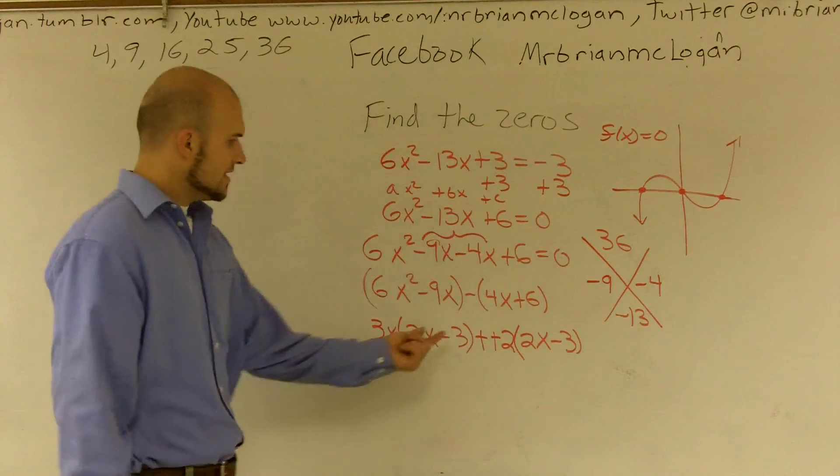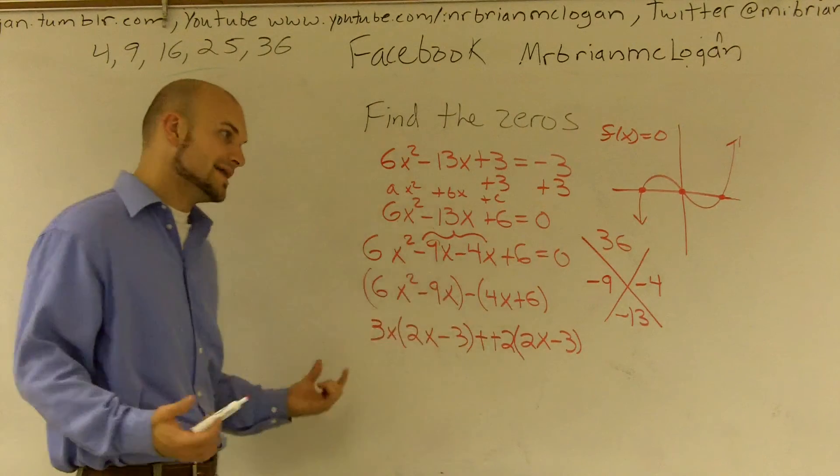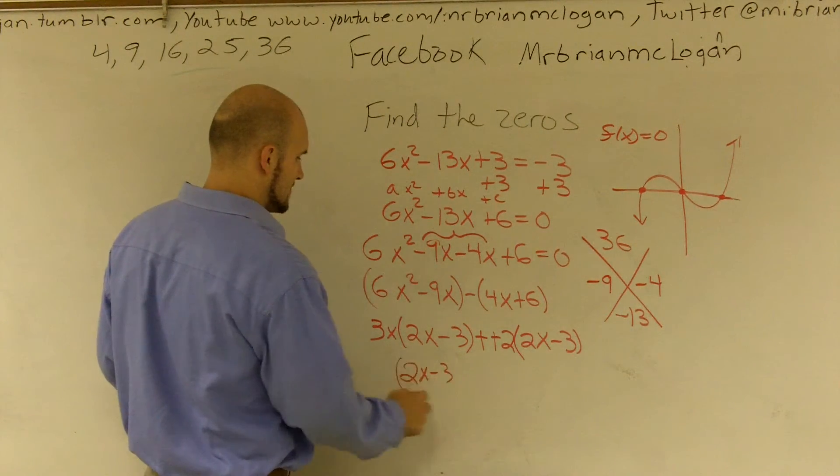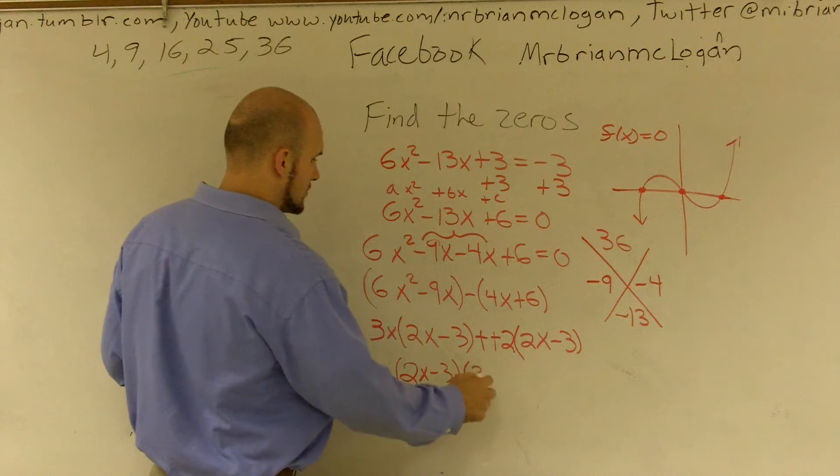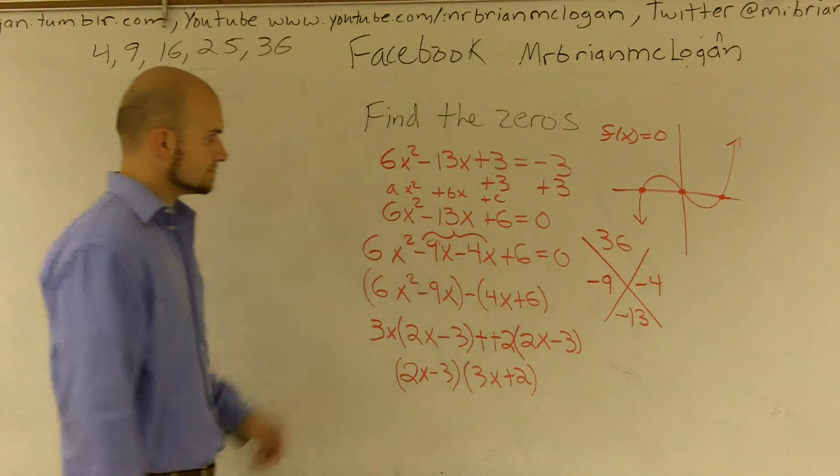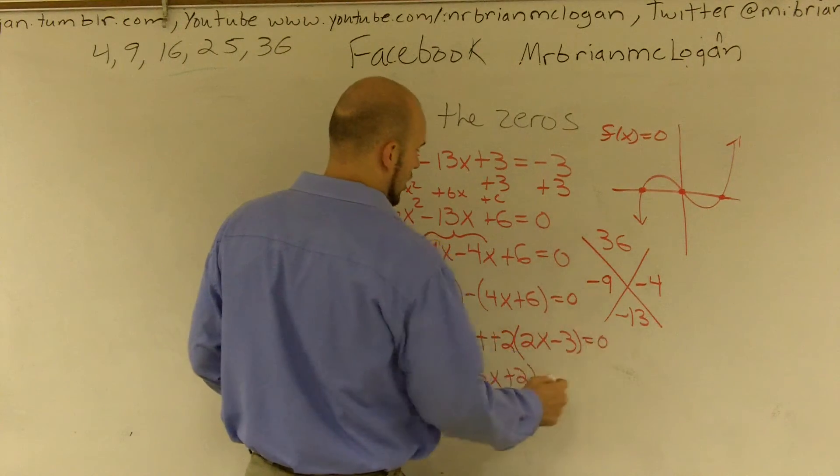Then I notice I both have a 2x minus 3. I can factor that now out. So, therefore, I have 2x minus 3 times 3x plus 2. And, my apologies guys, this still all equals 0.